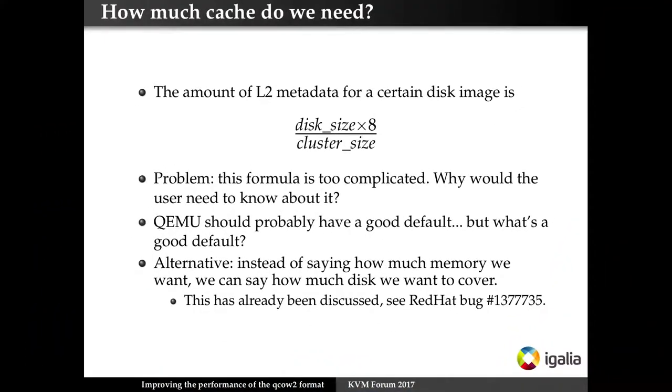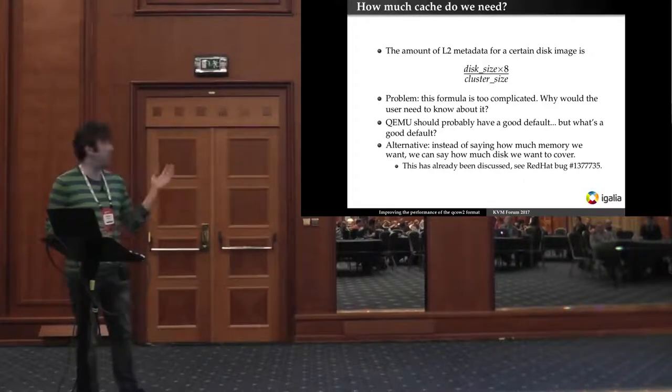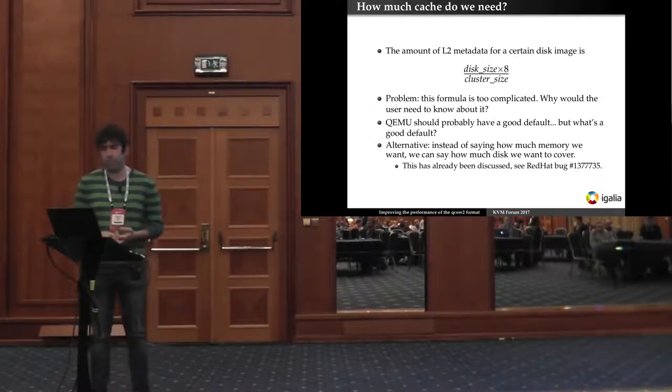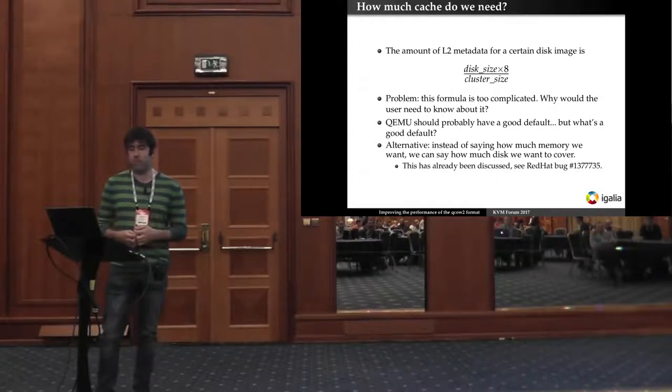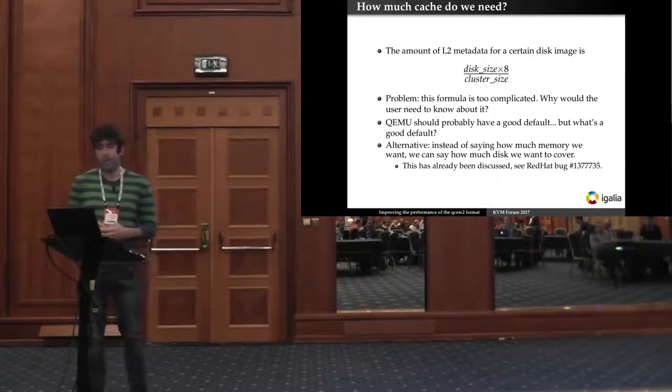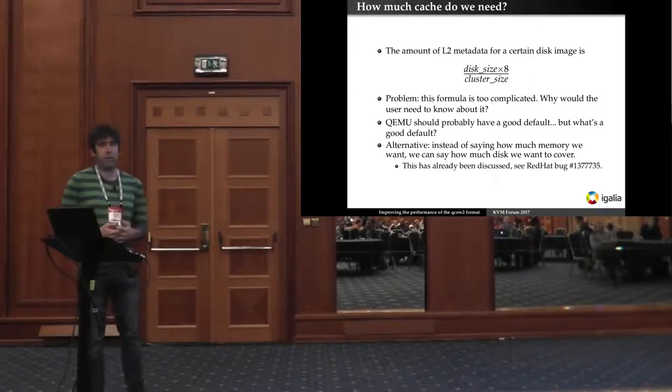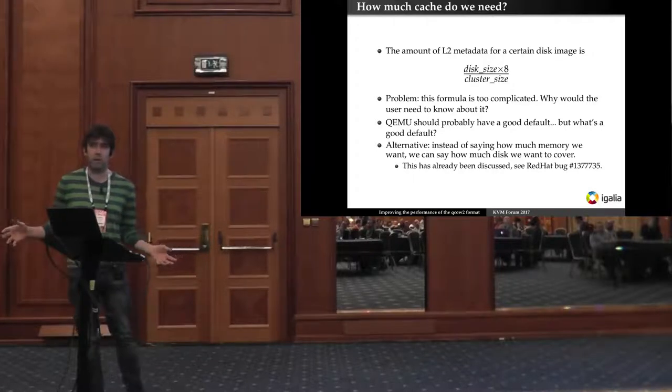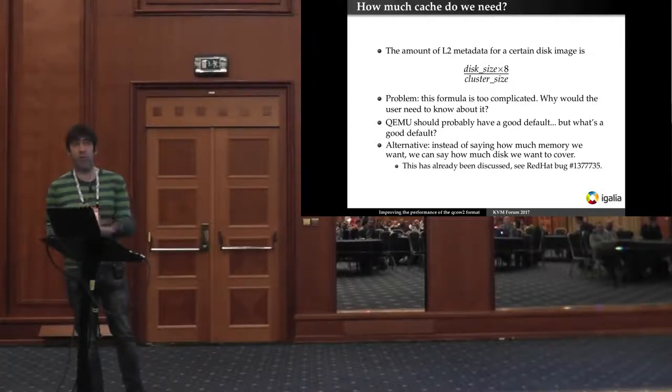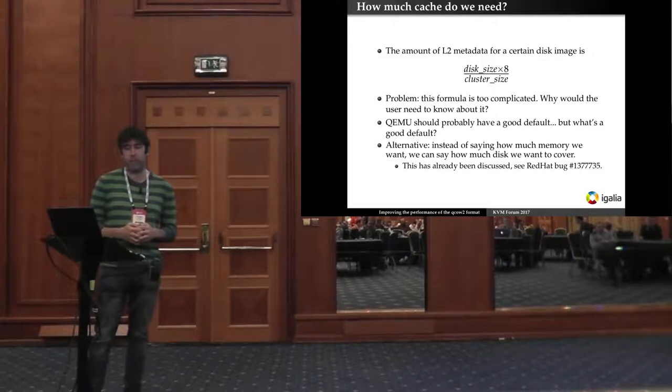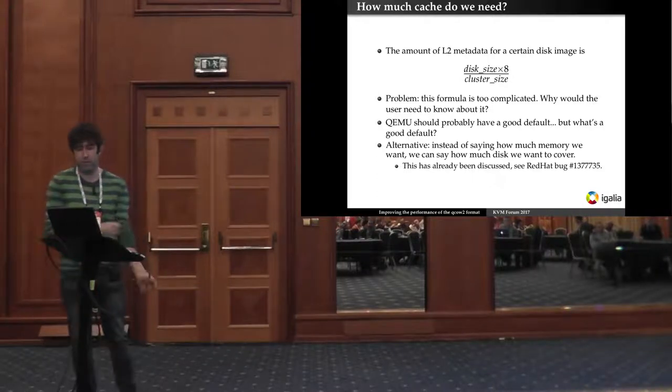Now the problem is how do we know how much cache we need? There's a formula for that. It's the one that you see here and the problem is that the formula is too complicated. It's not obvious and the user shouldn't really need to know about it. So maybe QEMU should have a better default but the problem is what's a good default? That's still an open question and we haven't really changed anything. There's also another alternative is that instead of saying how much memory we need what we can say is how much disk space we want to cover with the cache. Then of course you wouldn't know how much memory you're actually going to use so you have the problem from the other side. But there's still an ongoing discussion. There's a bug in the Red Hat bug tracker about this but nothing has been concluded yet.